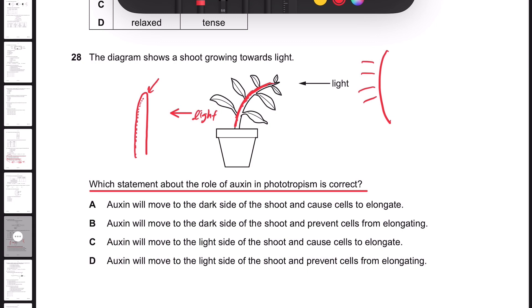And it promotes the growth on one side only, and that creates this bending effect. Because only one side is becoming longer or elongated, so now the structure is becoming bent.